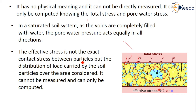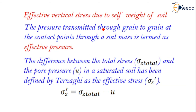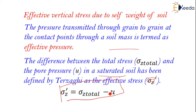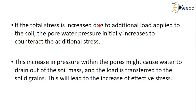The effective stress is not the exact contact stress between particles, but is a distribution of the load carried by the soil particles over the area considered, and it can only be computed, not measured. If the total stress increases due to an additional load applied to the soil, the pore water pressure initially also increases to counteract the additional stresses. This increase in pressure within the pores may cause water to drain out from the soil mass, transferring the load to the soil grains and leading to an increase in effective stress.